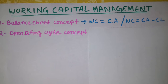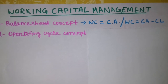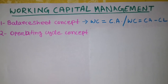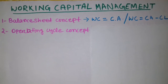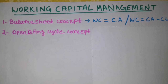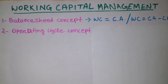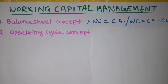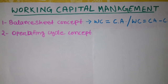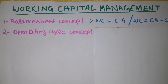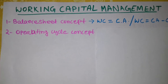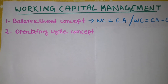Current liabilities, which form part of the net working capital calculation, include: bills payable, dividend payable, bank overdraft, accrued and outstanding expenses, sundry creditors, short-term loans, advances and deposits, and provision for taxation.